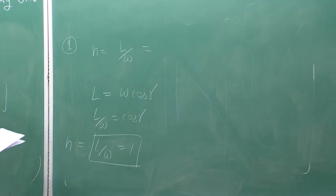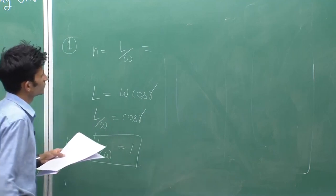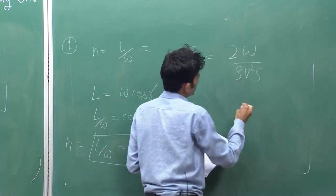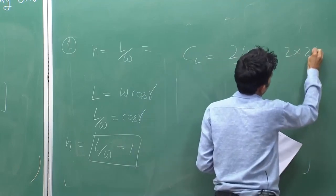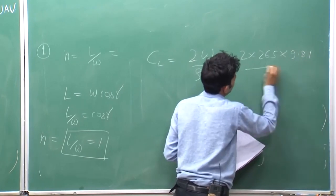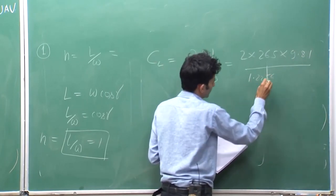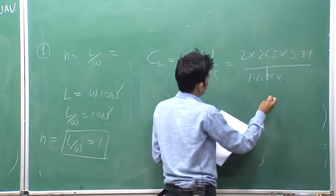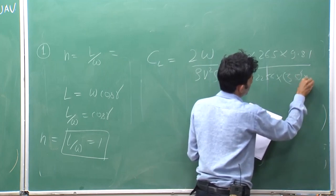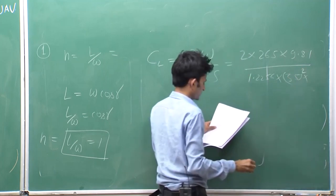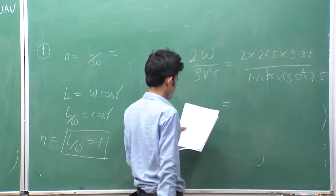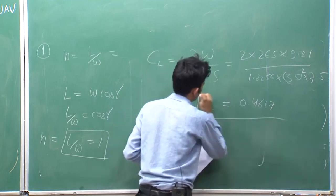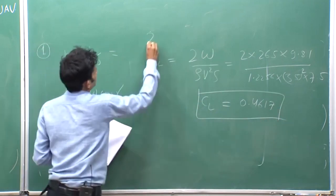In the second question, you have to find the CL value. CL equals 2W divided by ρ·V²·S. Weight is 265 kg converted to Newton by multiplying by 9.81. Mean sea level density is 1.225 kg/m³, V is 35 m/s, and area is 7.5 m². So CL comes out to 0.4617.